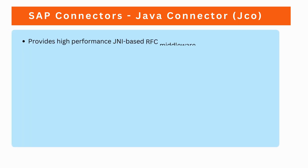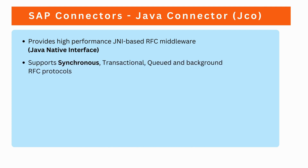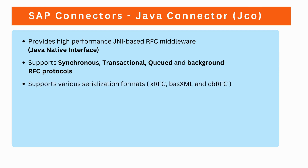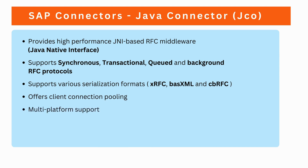Java connector provides high-performance JNA-based RFC middleware. JNA stands for Java Native Interface. JCO supports synchronous, transactional, queued, and background RFC protocols. It also supports various serialization formats like XRFC, BASXML, and CBRFC. JCO offers client connection pooling, multi-platform support, and it also supports page handling.